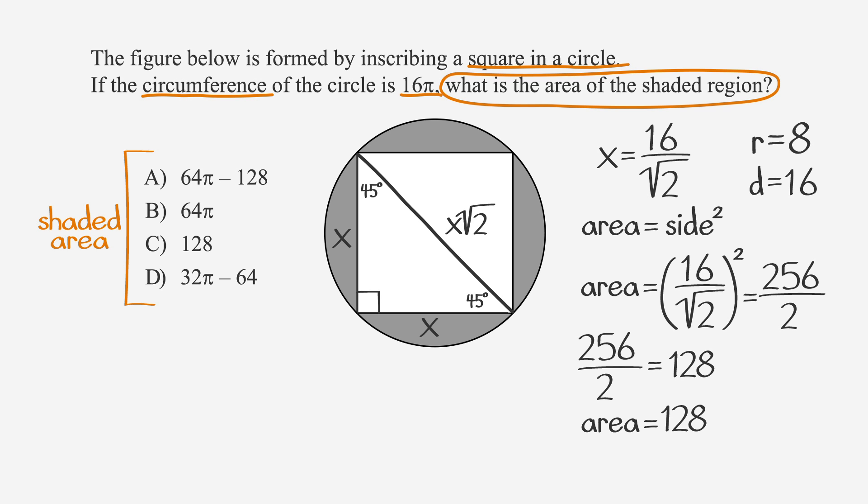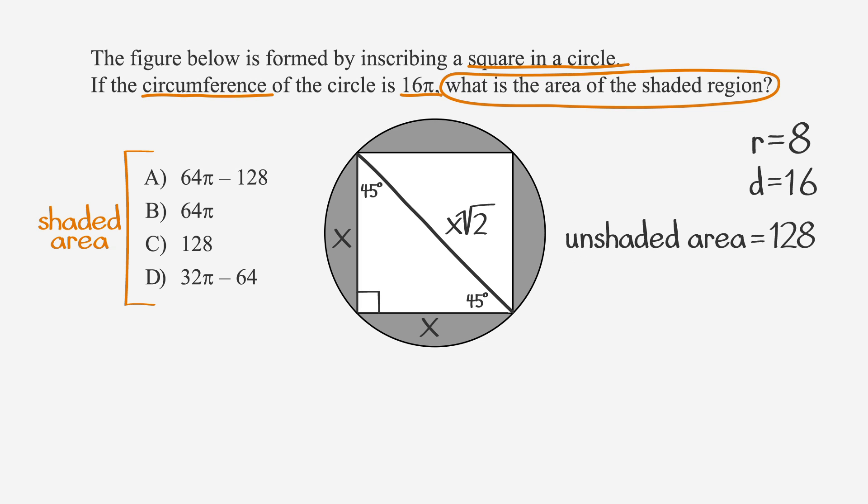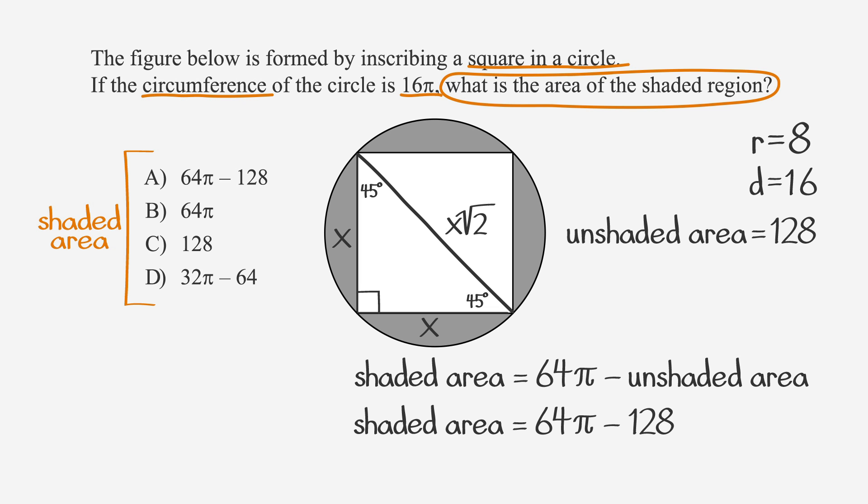So the area of the square is 128, which means the area of the unshaded region is equal to 128. Finally, we can plug this into the equation we wrote for the shaded area earlier. So shaded area equals total area, 64π, minus unshaded area, 128, which becomes 64π minus 128. This looks like we should type it into our calculator, but looking at our answer choices, answer choice A is 64π minus 128. We don't need to solve any further, so go ahead and circle answer choice A as the correct answer.